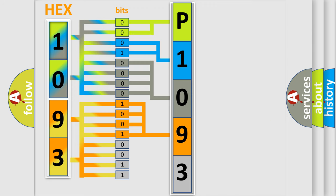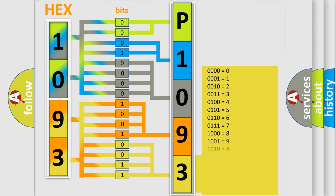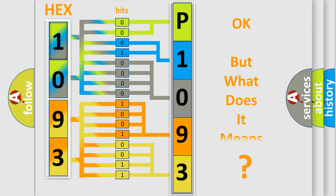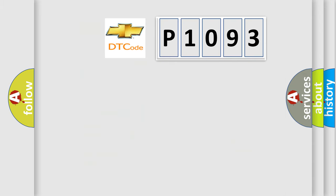A single byte conceals 256 possible combinations. We now know in what way the diagnostic tool translates the received information into a more comprehensible format. The number itself does not make sense to us if we cannot assign information about what it actually expresses. So, what does the diagnostic trouble code P1093 interpret specifically for Chevrolet?